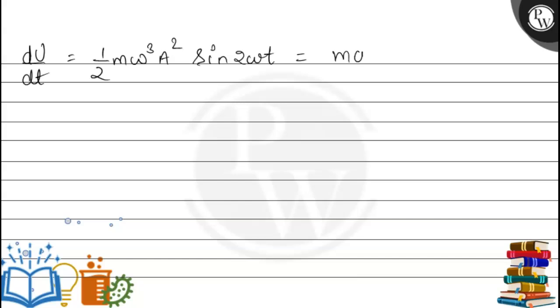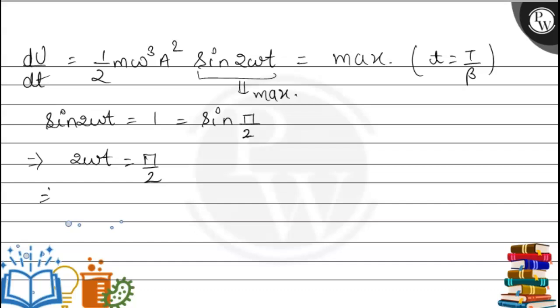And this change in slope is maximum, so this term has maximum value and sin 2ωt is maximum. The maximum value of sin is 1. So sin 2ωt becomes equal to 1, and 1 can be written as sin π/2 because at sin 90° sin is maximum having value 1. Then we compare both sides and 2ωt becomes equal to π/2. Now the value of ω is 2π/T, so 2π/T times t equals π/2.